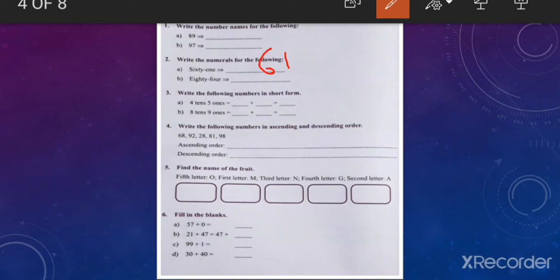Next, number three, write the following numbers in short form. Four tens, five ones. So four tens means forty plus five ones, that is five, equals forty-five, okay? In this way.